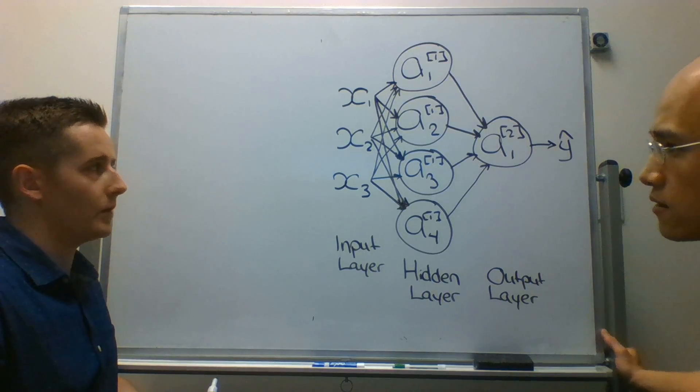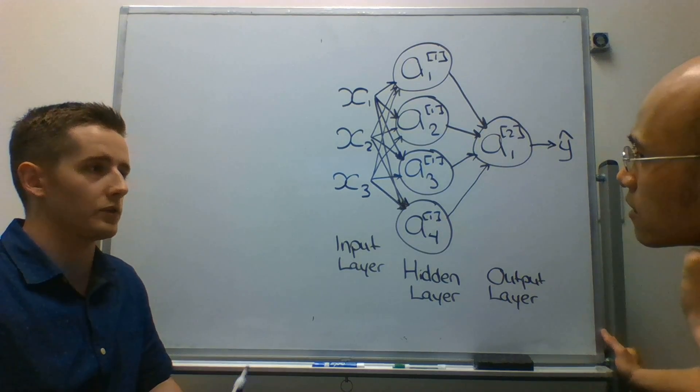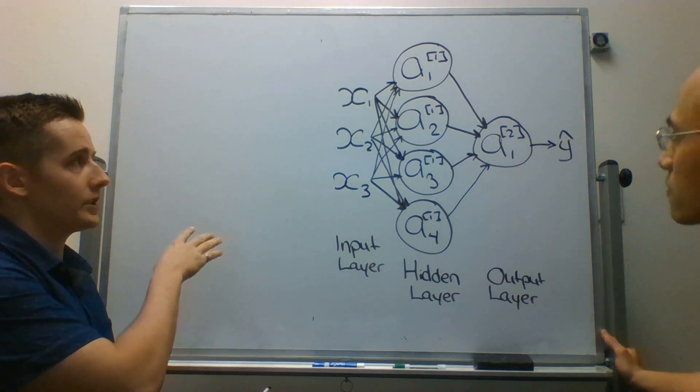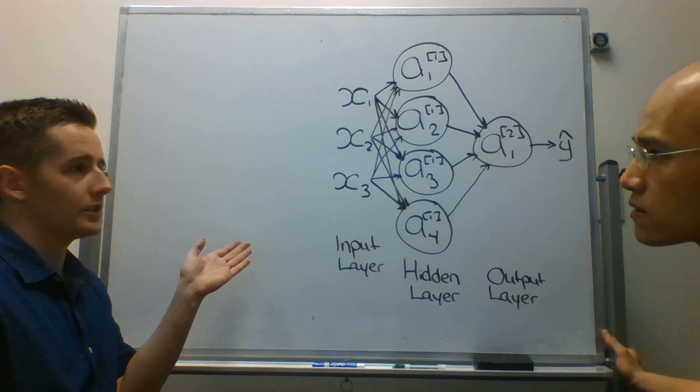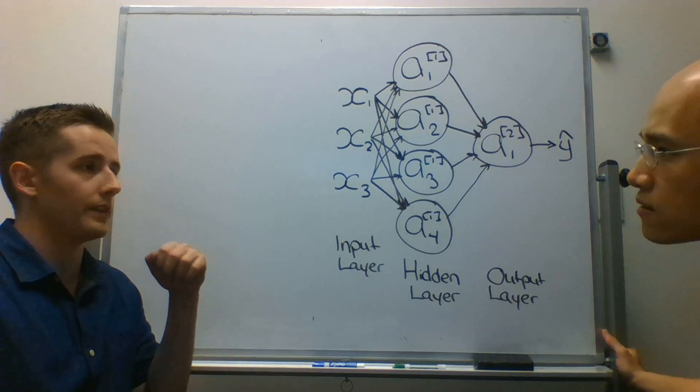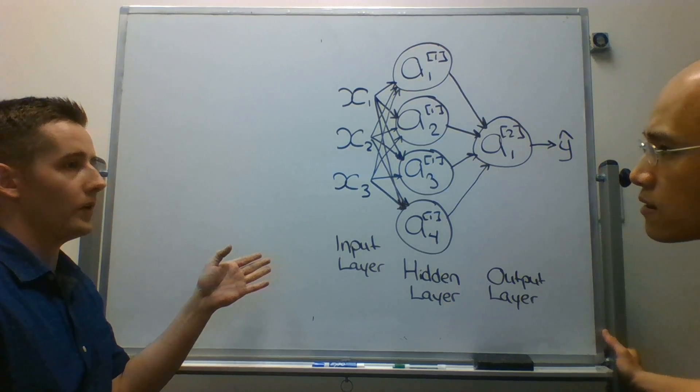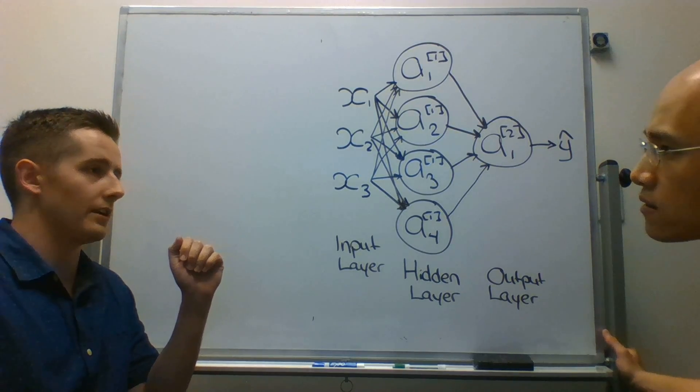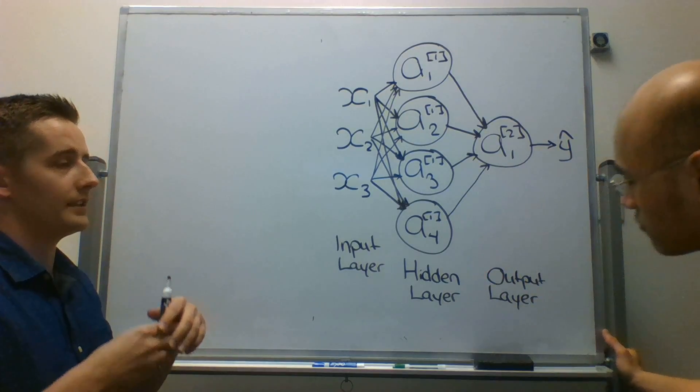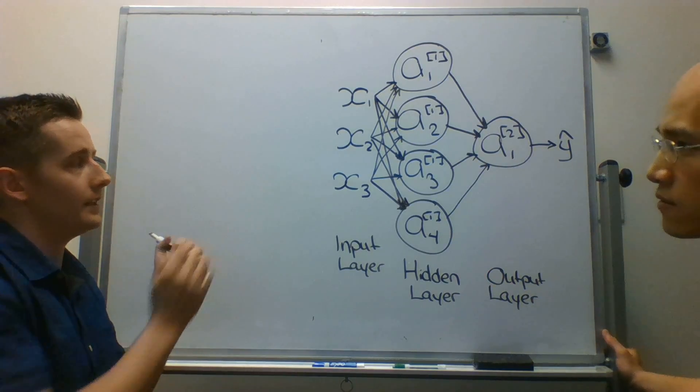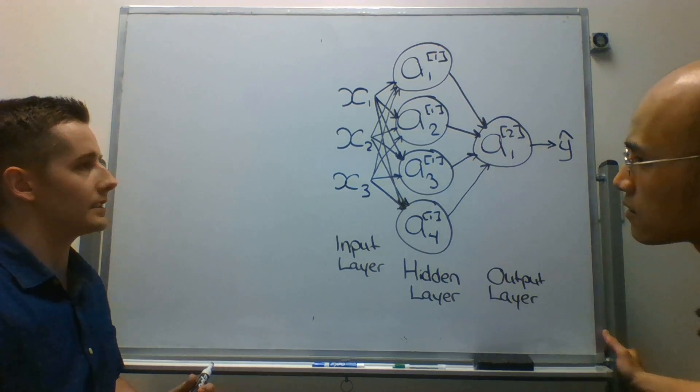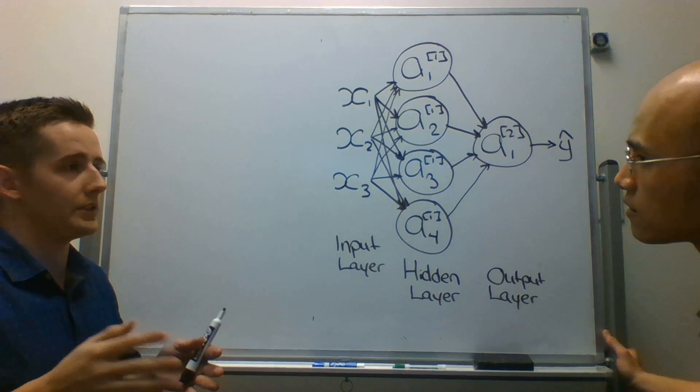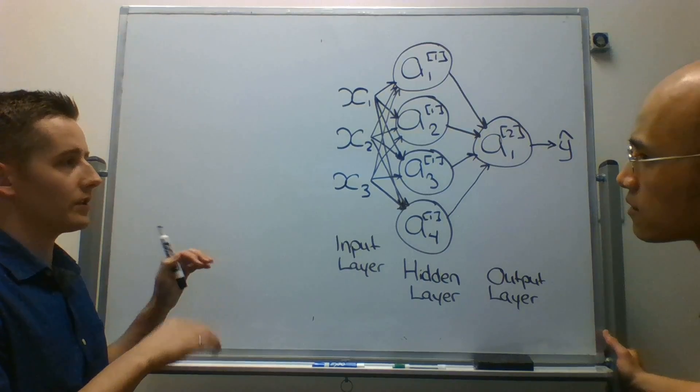There absolutely is an intercept term. We will see it when we go into the actual mathematical function of this. There are different diagram representations of a neural network. I have seen some with the intercept term. The one that I'm following is specifically from Coursera and Andrew Ng's courses. And in his courses, he doesn't write the intercept term because, one of the reasons is, instead of having a separate B term,